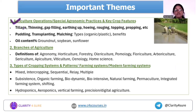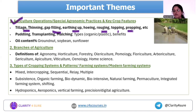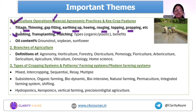For agriculture operations, you need to cover different operations like thinning, gap filling, tillage — and there are different tillage concepts to cover. Then there is ratooning — ratooning is following banana and sugarcane. You need to have a look over the special agronomic practices which are particularly followed in specific crops — like puddling and transplanting for paddy. That becomes important. Cover those agronomic practices.